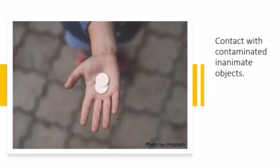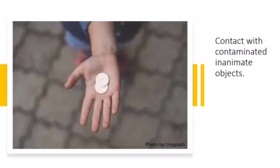Another mode is contact with contaminated inanimate objects. When diseases are caused by pathogens that can be transmitted from one person to another, it is also possible for that pathogen to be transmitted from a person to an object. For example, viruses and bacteria can be transmitted through tiny droplets — such as when a person sneezes. Once we touch that object which contains those tiny droplets, there is a possibility for us to acquire viruses or bacteria which can cause diseases.